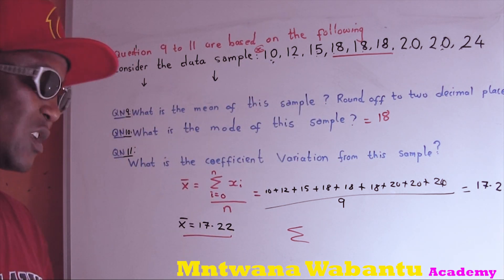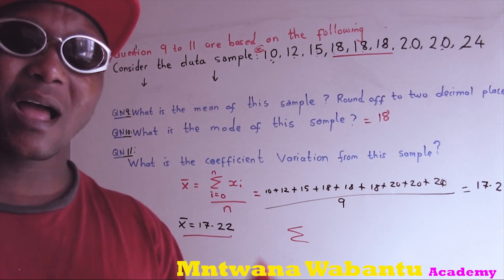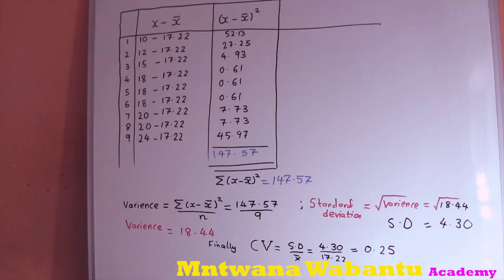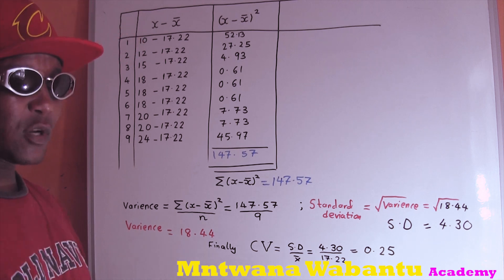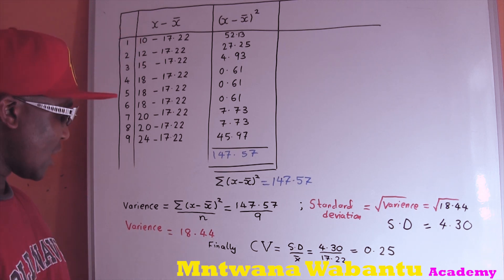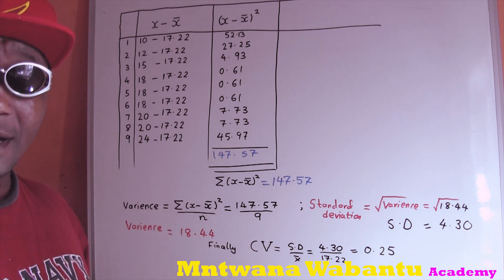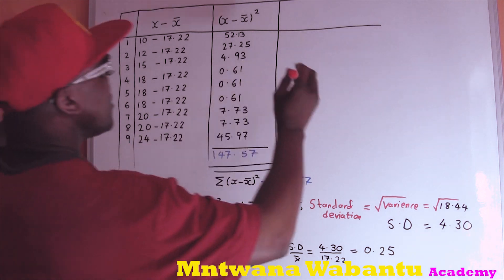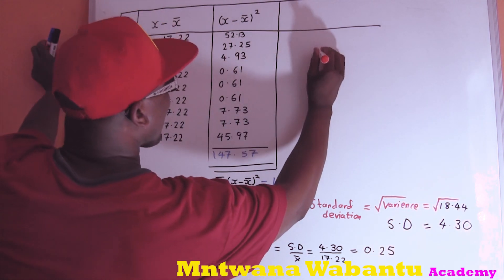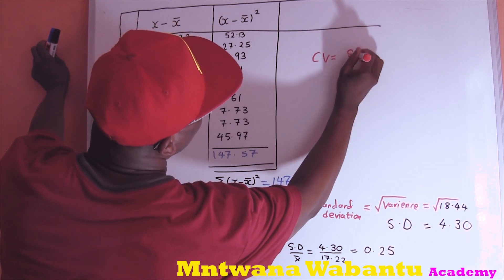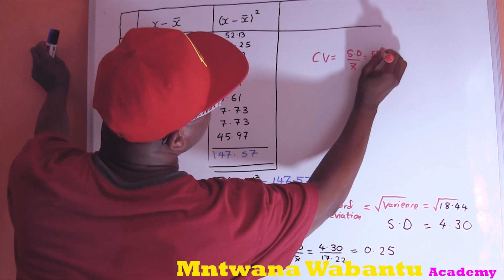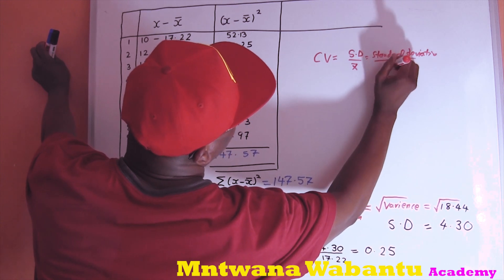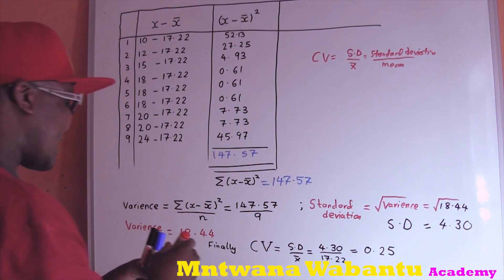First I'm going to show you how to use a calculator and then also how to do it manually. To get the coefficient of variation, you always take standard deviation over the mean. So coefficient of variation equals standard deviation divided by mean. We need to get the standard deviation.